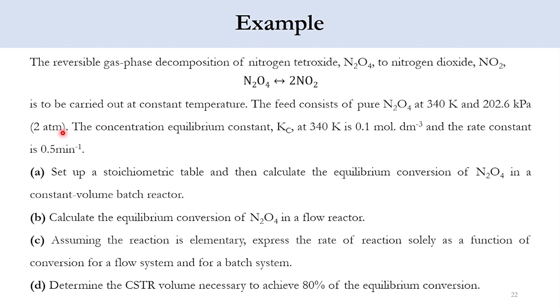The feed consists of pure N2O4 at 340 Kelvin and 202.6 kilopascals or 2 atm. We are assuming that the reaction temperature and pressure are constant in the system. The concentration equilibrium constant K_C at 340 Kelvin is 0.1 mole per cubic decimeter and the rate constant is 0.5 per minute. We need these values for the solution of the system. Now we have to solve four tasks: set up a stoichiometric table and calculate the equilibrium conversion of N2O4 in a constant volume batch reactor.